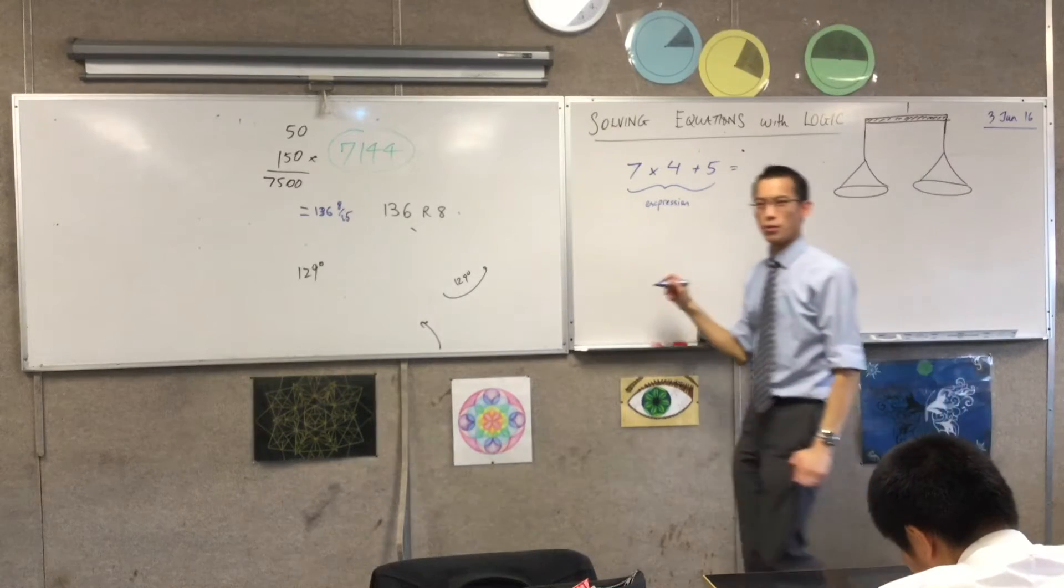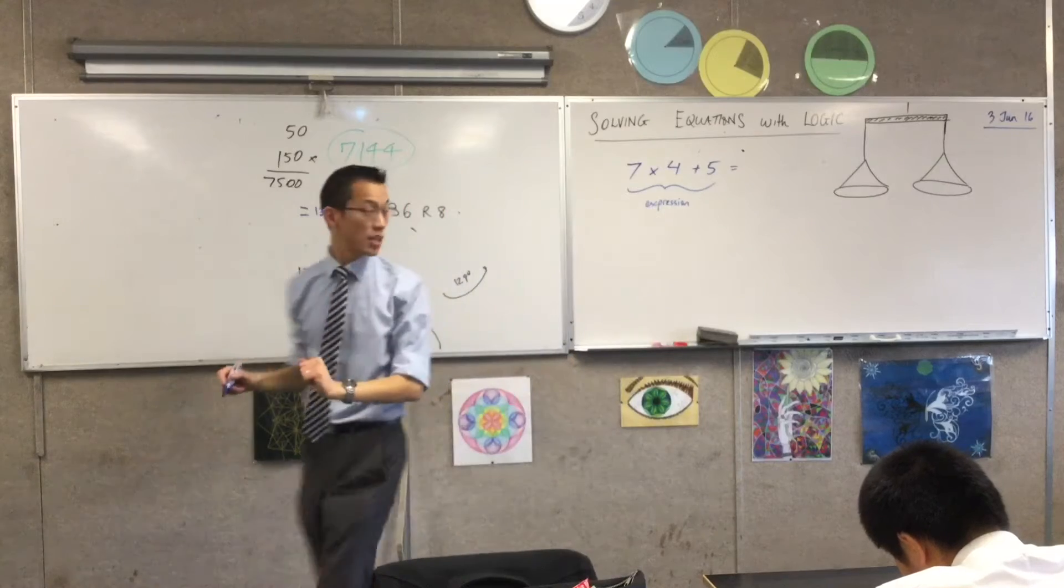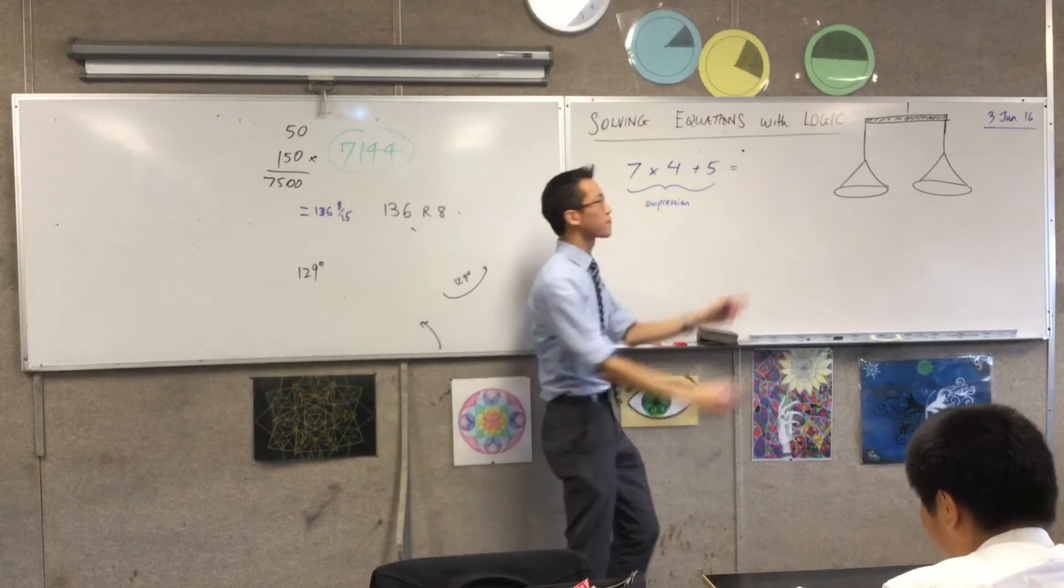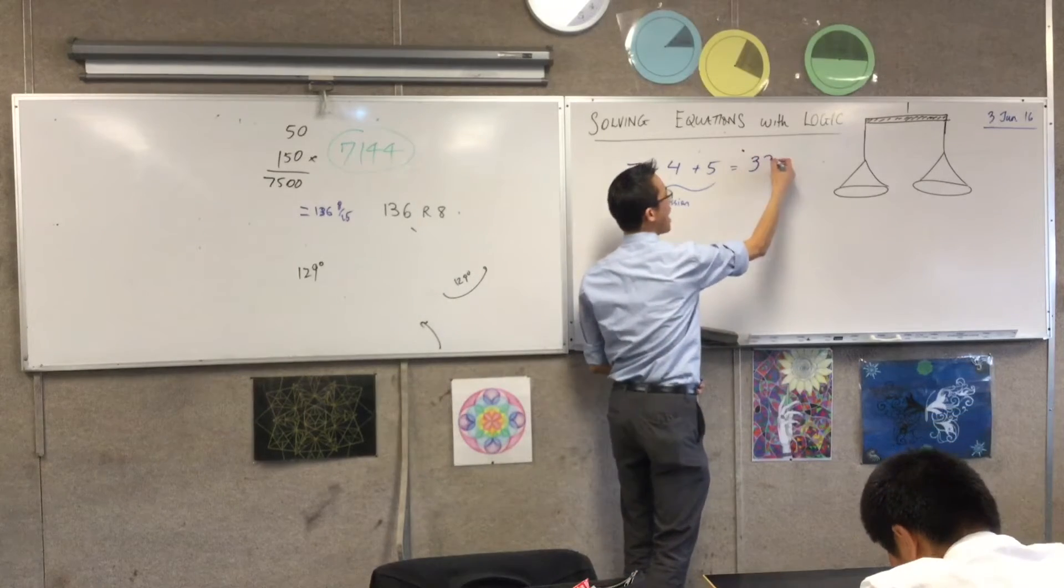Order of operations tell me to do the multiplication first. So 7 times 4, of course, is 28. 28 plus 5 is? 33. Okay, so now, now I have an equation.